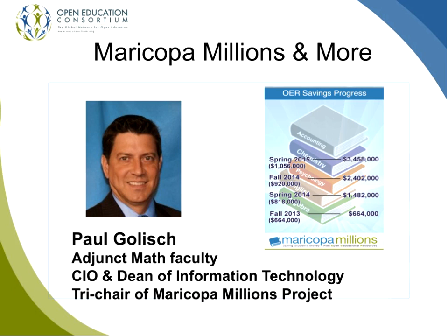As one of the tri-chairs of the Maricopa Millions Project, our biggest goal was to save students $5 million. We've been tracking that on our website at maricopa.edu/OER. After about two years on the project, we're up to $3.5 million. We've been tracking each semester — fall and spring — and we're hitting right about $1 million a semester. The way we calculate that is with conservative numbers: about $100 per textbook and about 20 students per class.